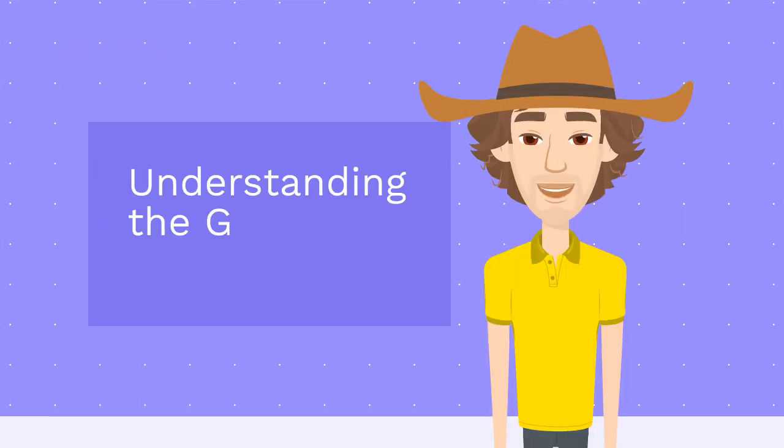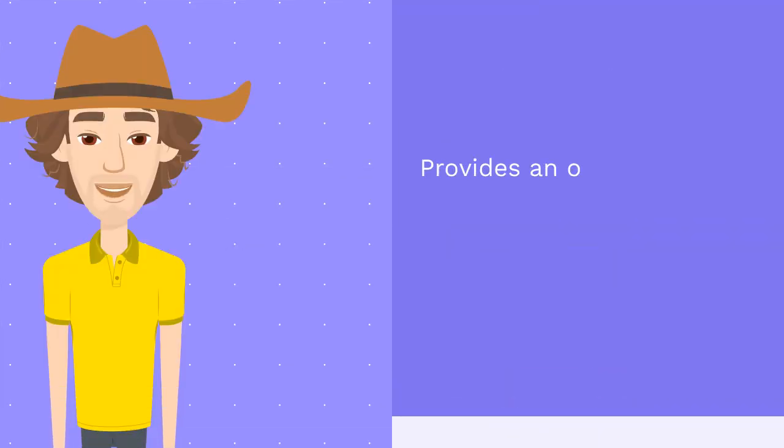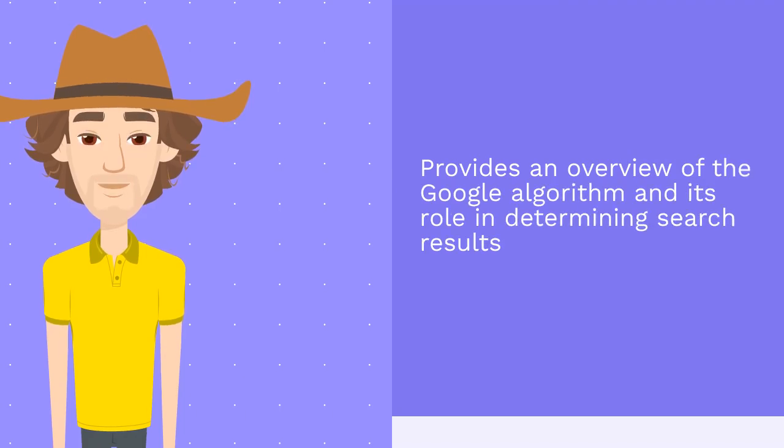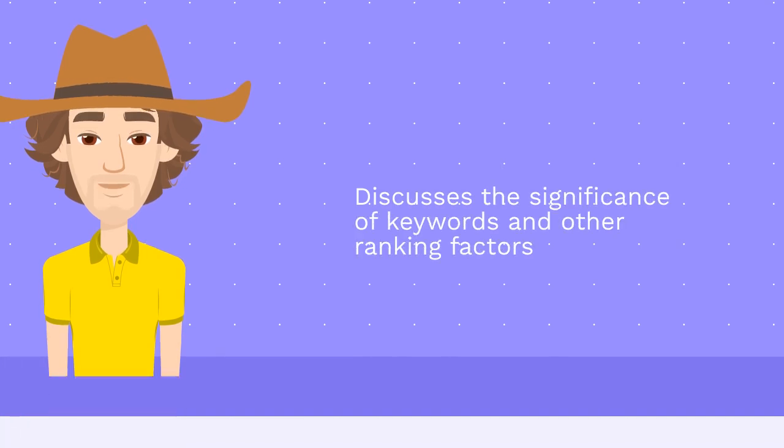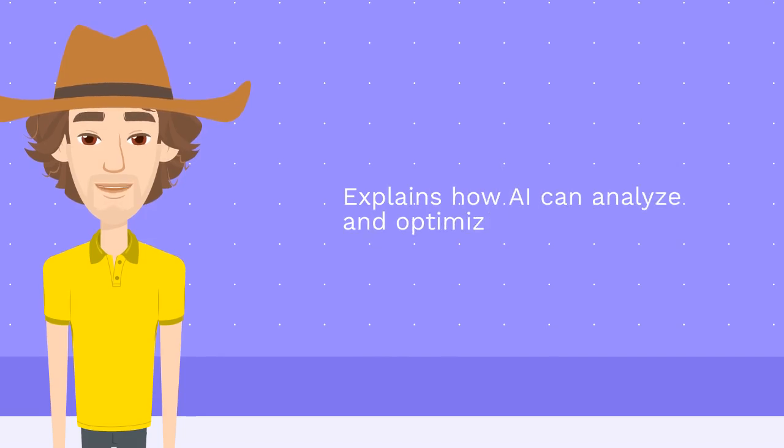Understanding the Google algorithm: Provides an overview of the Google algorithm and its role in determining search results. Discusses the significance of keywords and other ranking factors. Explains how AI can analyze and optimize these factors to improve ranking.